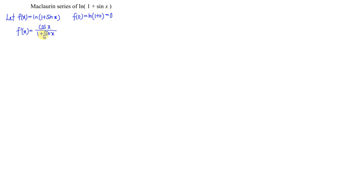As we can see, this is a fractional function. If we differentiate it directly, it gets quite complicated. So what we do here, instead of differentiating this complicated function, we will split it into two parts. The first one, the numerator, let it be g(x), so we have cos x. The second part, let it be the denominator h(x), which is 1 + sin x.